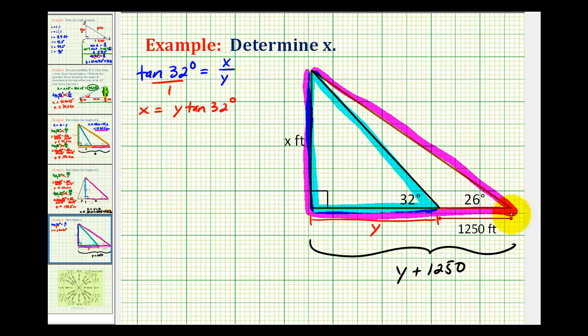Now let's take a look at the larger right triangle. The tangent of 26 degrees would be equal to the ratio of the opposite side, which is x, divided by the length of this longer adjacent side, which is y plus 1,250.